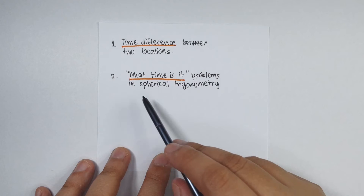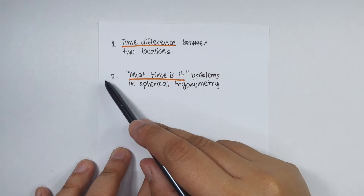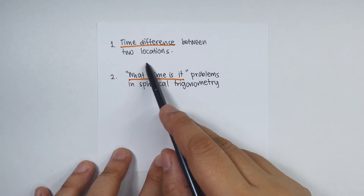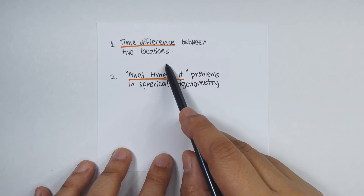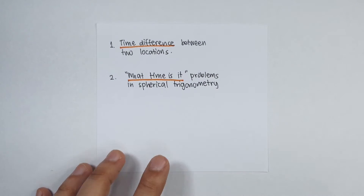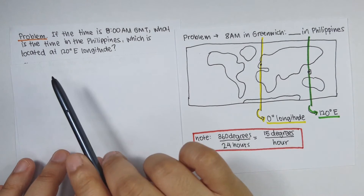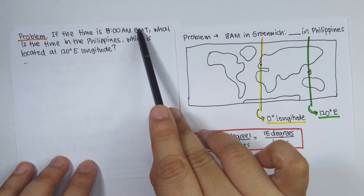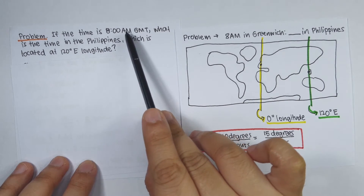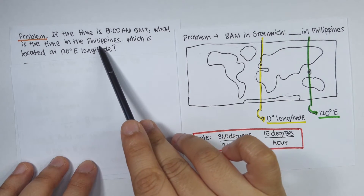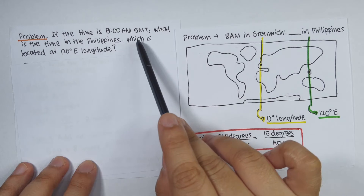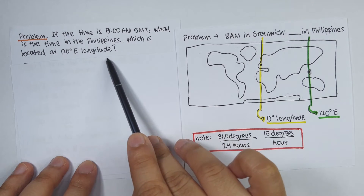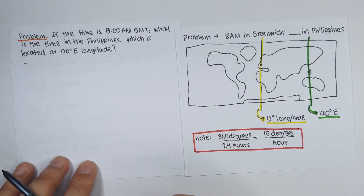Problem number two: we will learn how to solve 'what time is it' problems in spherical trigonometry. The problem is: if the time is 8 a.m. GMT, what is the time in the Philippines, which is located at 120 degrees east longitude?